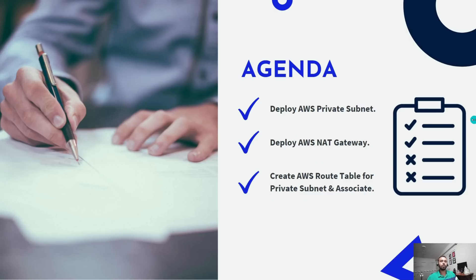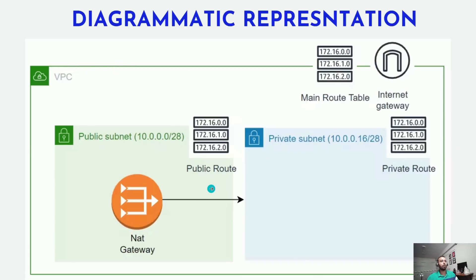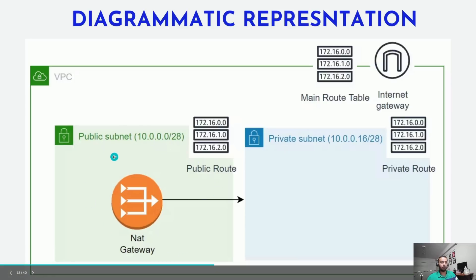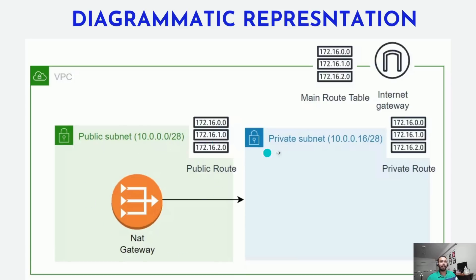Let's understand this implementation in a diagrammatic format. As a result of part one and part two tutorials, I have created a VPC with a main route table and added the route of an internet gateway into that main route table. In part two, I created public subnets — public subnet one and two — which already have a public route table with an entry for the internet gateway, associated with those public subnets.